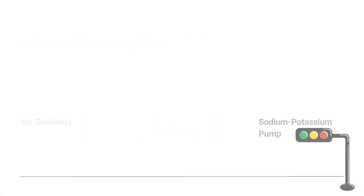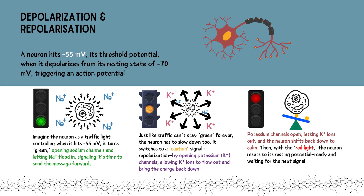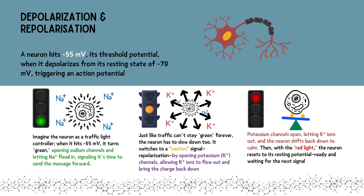Essential for precise responses during anesthesia, the neuron works like a traffic light system guiding signals smoothly. When it hits -55 mV, it's the green light moment — sodium channels open and Na+ ions flood in, energizing the neuron to send its signal down the line. But the light can't stay green forever, so next comes the yellow light: potassium channels open and K+ ions flow out, gradually bringing the charge back down and calming the neuron.